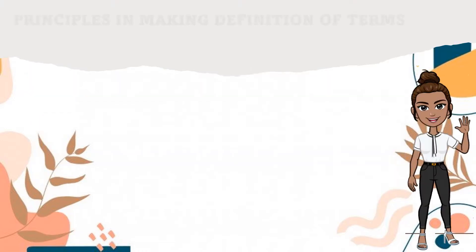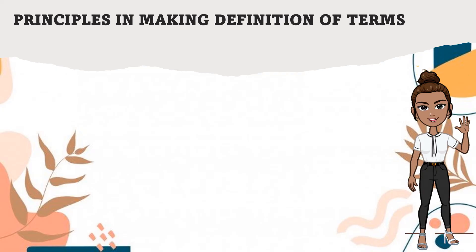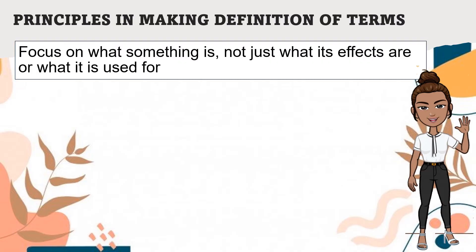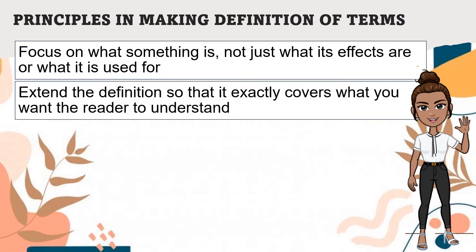These are the few principles to keep in mind in making definition of terms. One, make sure that in the definition, you focus on what something is, not just what its effects are or what it is used for. Two, extend the definition so that it exactly covers what you want the reader to understand. Never assume that if the term appears to be quite common, everyone knows what it means, and do not overload your definition.